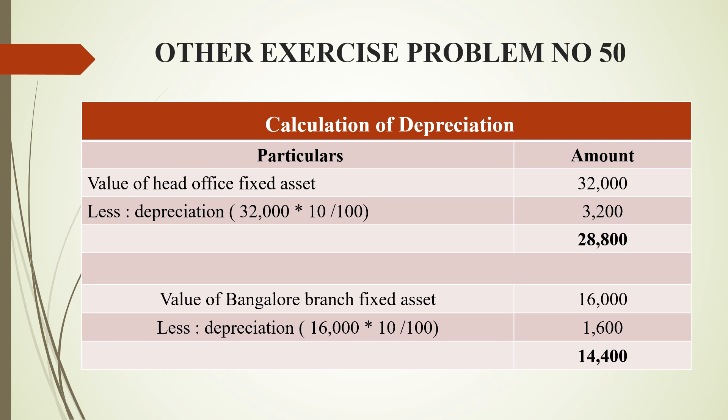The Bangalore branch fixed asset value is 16,000; 10% depreciation is 1,600 rupees. After deducting, the final value is 14,400 rupees. So 28,800 and 14,400 will appear in the balance sheet, and 3,200 and 1,600 will appear in the profit and loss account.